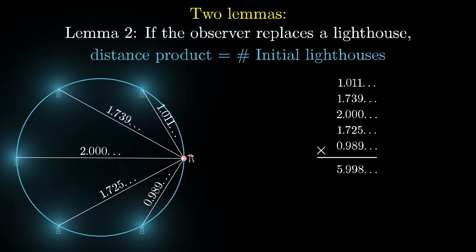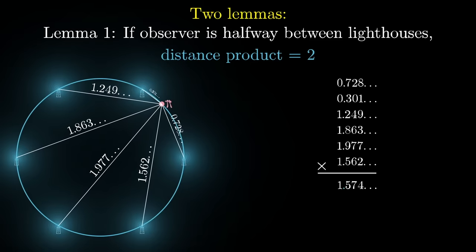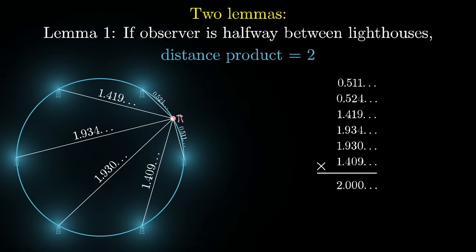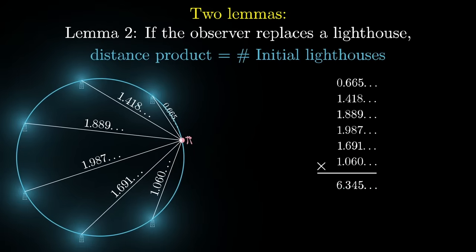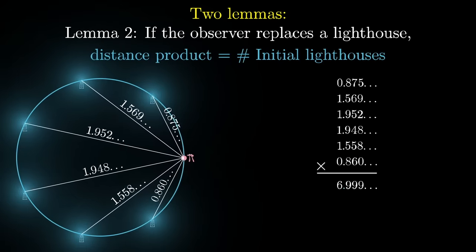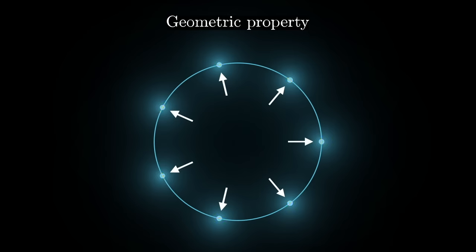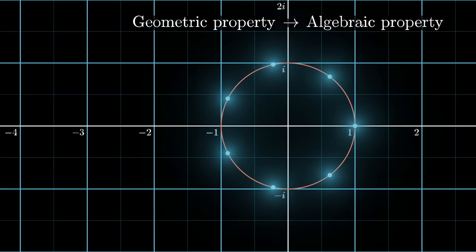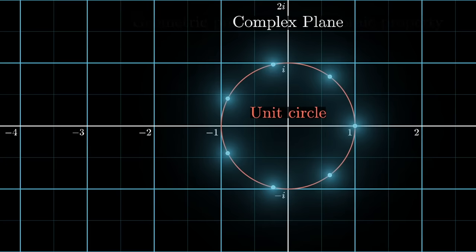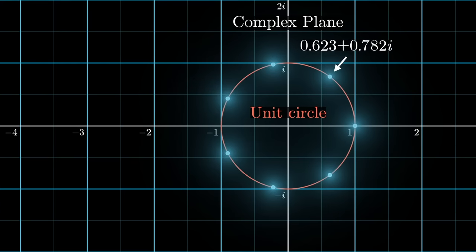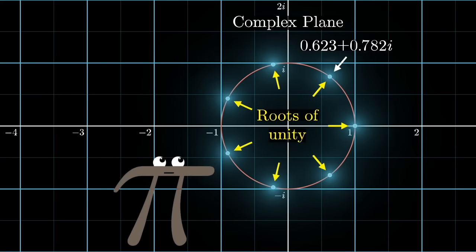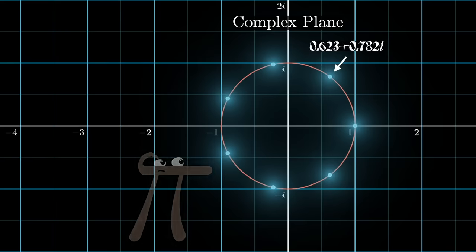Those two facts might seem crazy — it's not even obvious that the distance product should work out to be an integer in either case, and it seems super tricky to compute all the distances and multiply them together. But it turns out there's a trick to this tricky calculation that makes it quite simple. The main idea is that the geometric property of these points being evenly spaced around a circle corresponds to a really nice algebraic property if we imagine this to be the unit circle in the complex plane, with each lighthouse sitting on some specific complex number.